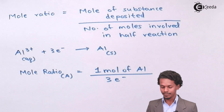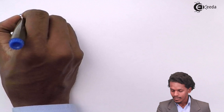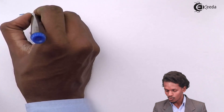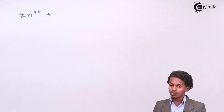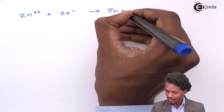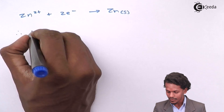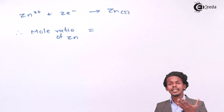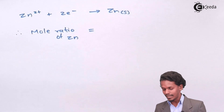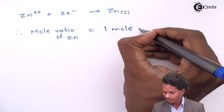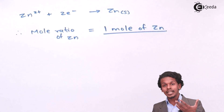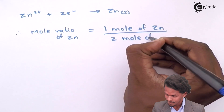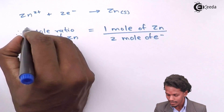Now let us calculate the mole ratio of zinc. Zinc is present in ZnSO4 solution. When ZnSO4 dissociates, it forms Zn²⁺, and this Zn²⁺ accepts two electrons to form solid zinc deposited on the electrode. Therefore the mole ratio of zinc is 1 mole of zinc divided by 2 electrons, which equals 1/2. These are the mole ratio values we will use.